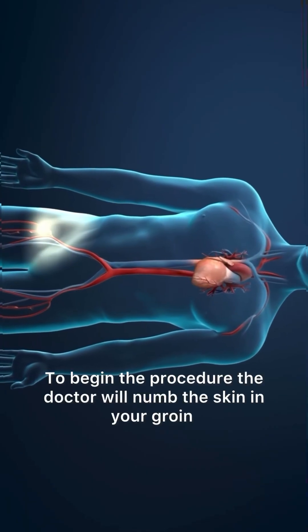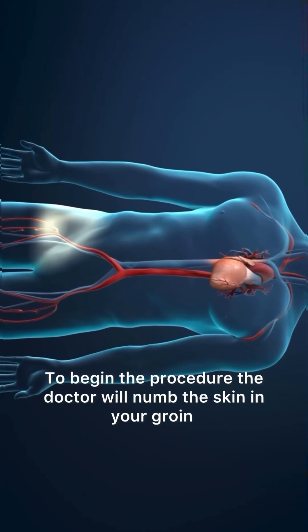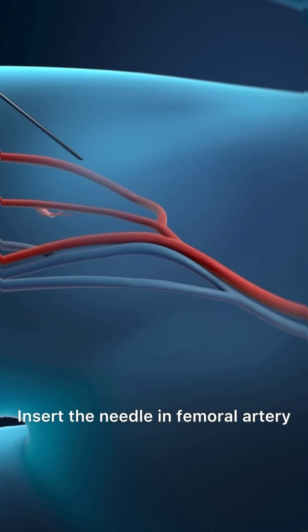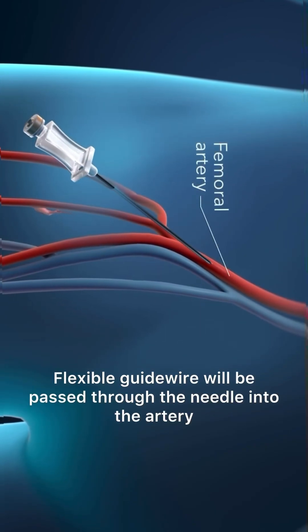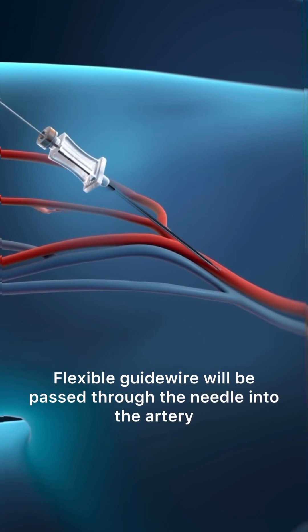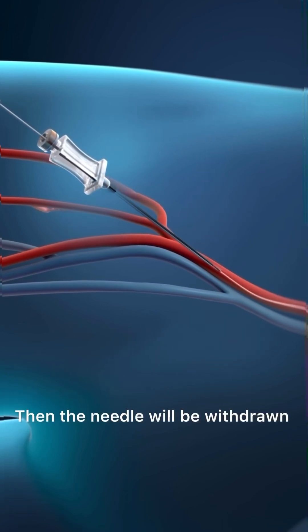To begin the procedure, the doctor will numb the skin in your groin, insert the needle in the femoral artery. A flexible guide wire will be passed through the needle into the artery. Then the needle will be withdrawn.